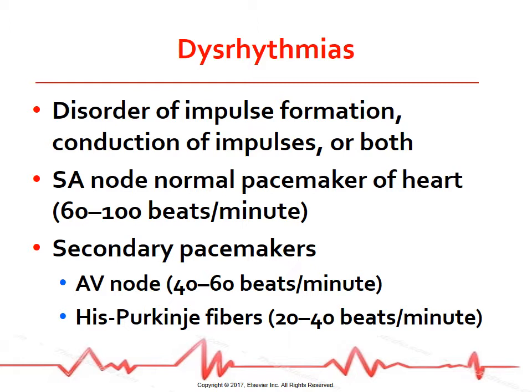Normally, the SA node is the pacemaker of the heart. It spontaneously fires 60 to 100 times per minute. A secondary pacemaker from another site may fire in two ways. If the SA node fires more slowly than a secondary pacemaker, the electrical pacemaker will fire automatically at its intrinsic rate. These secondary pacemakers may start from the AV node at a rate of 40 to 60 times per minute, or the Purkinje fibers at a rate of 20 to 40 times per minute.